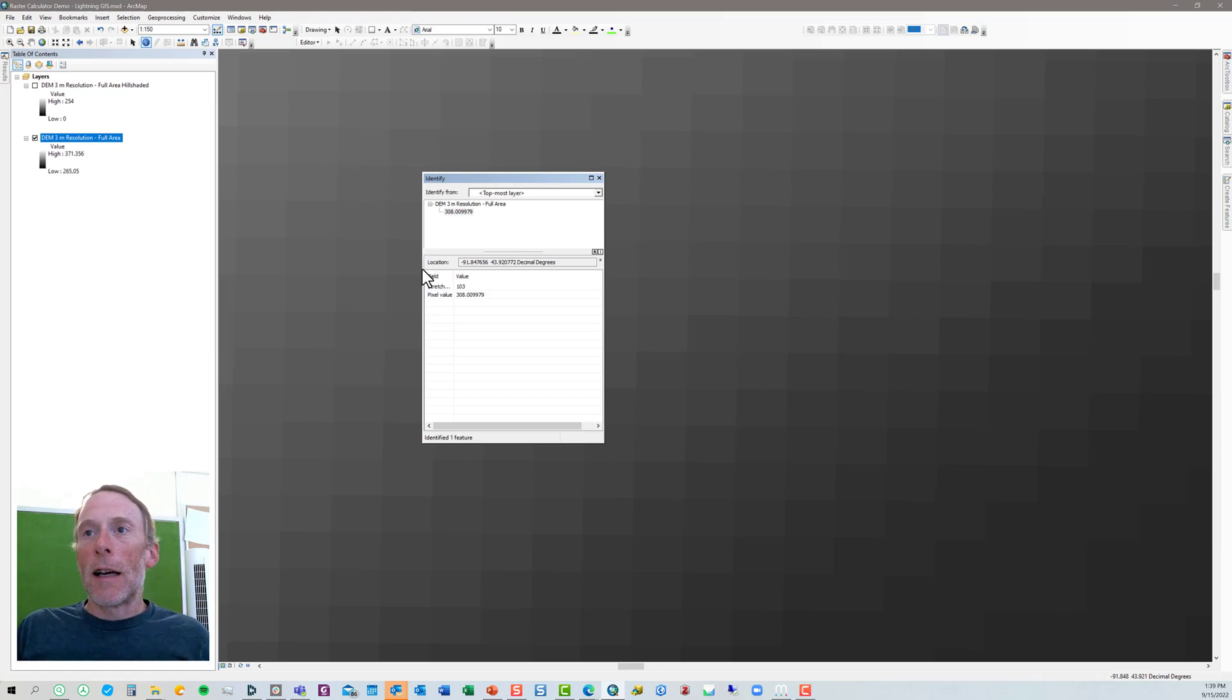All right, so our goal today is to convert this pixel value or raster value from 308 meters to its equivalent in feet.